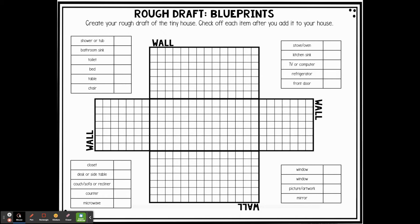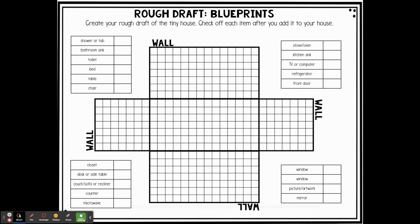Here is the final version requirement list — it's everything we just read through, but as a final checklist. On the Google Slides, you'll see that the check marks can be moved once you've completed each item to check them off as you go through. Everything I just read through around that rough draft is on this one. Then you move on to your final pages.